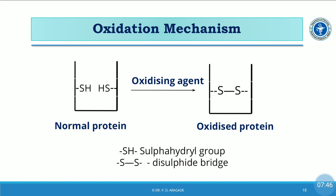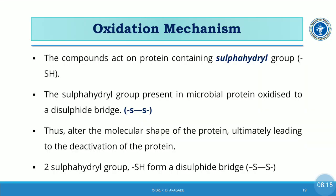As shown in the oxidized protein diagram, a disulfide bridge is formed, changing the shape of the protein. This leads to destruction of the protein and stops the biochemical mechanisms within that particular microorganism. The sulfhydryl groups present in microbial proteins are oxidized to a disulfide bridge by removal of hydrogens, thus altering the molecular shape of the protein and ultimately leading to deactivation.